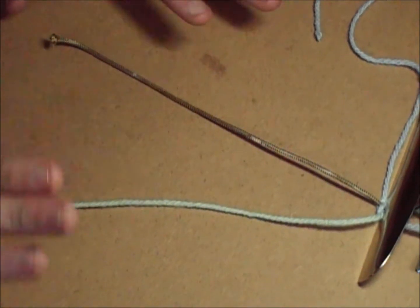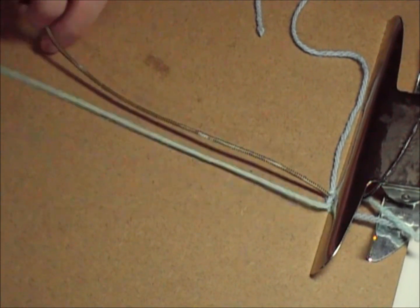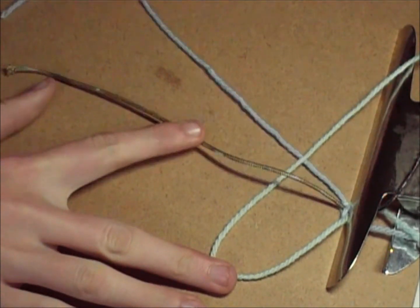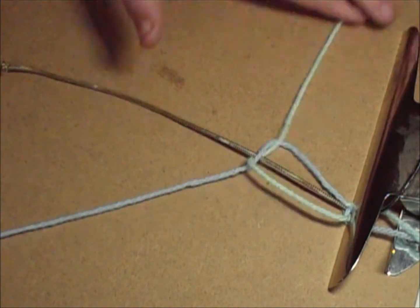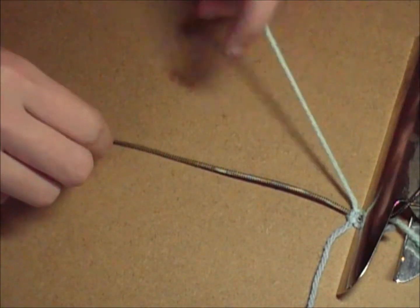So for the second one, we will always continue on with the green. So you've got under and over the blue. The blue goes over and through the loop. Now you're going to have to do this very tightly as you don't want it to come undone.